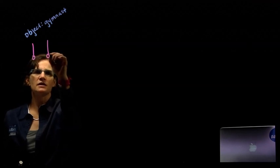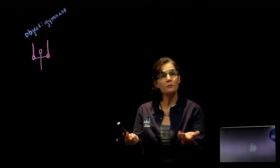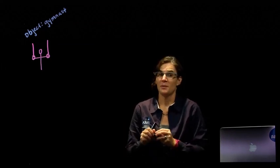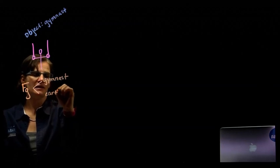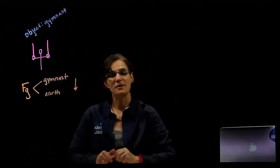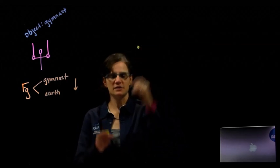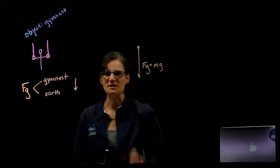Just to give you a sense of what this looks like if you're not familiar with an iron cross: here are the rings, and the gymnast stands and holds the rings like that. The first force is the force of gravity, which acts between the gymnast and the earth in the downward vertical direction. On the free body diagram, the force of gravity acts straight down and equals mass times gravity.